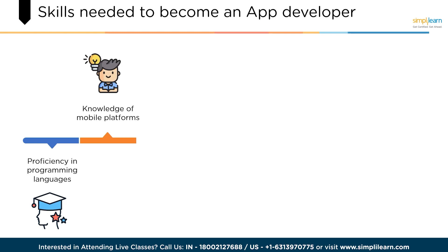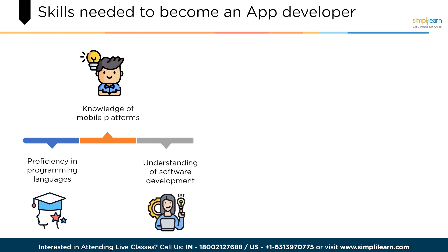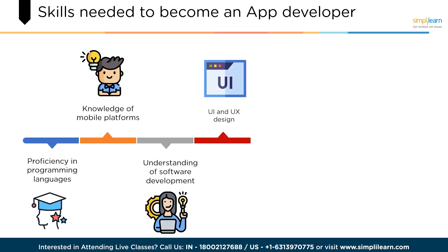Next is knowledge of mobile platforms. You should be familiar with both Android and iOS platforms and have an understanding of the unique features of each platform. Following that is understanding of software development — you need to have a deep understanding of software development principles including software architecture, design patterns and development methodologies. The next skill is user interface and user experience design. To create engaging and intuitive apps, you need to have an eye for design and be able to create compelling user experiences.